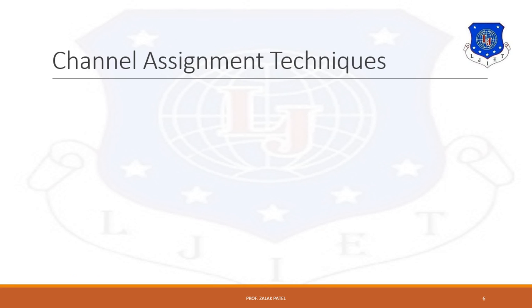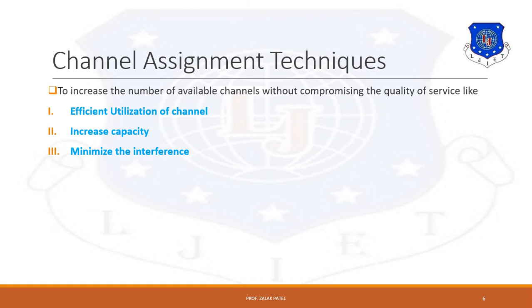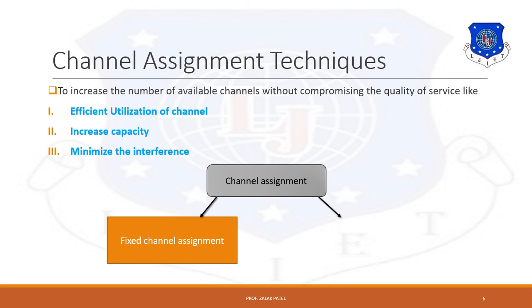Next is the channel assignment technique. The radio spectrum needs to be efficiently used, and for achieving this, the frequency reuse method can be applied. But to achieve the main objectives — increasing channel capacity and minimizing interference — the channel assignment technique is used. It has three purposes: efficient utilization of channels, increasing capacity, and minimizing interference. There are two types: fixed channel assignment and dynamic channel assignment. Let's start with fixed channel assignment.